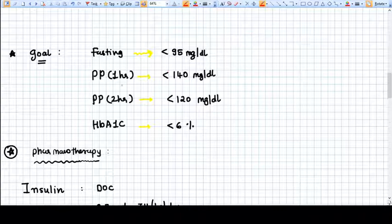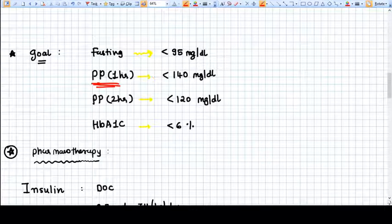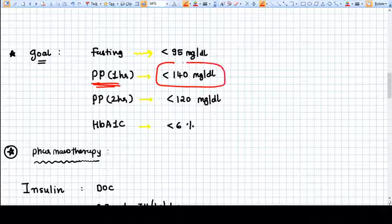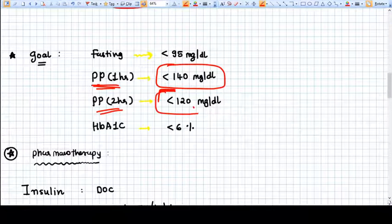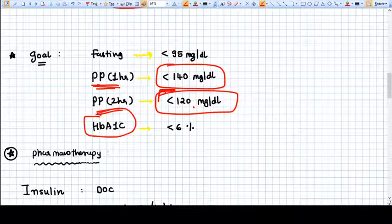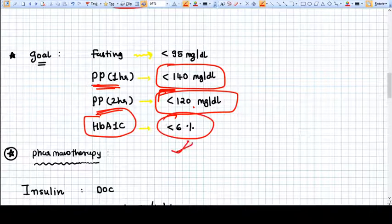What are our goals for glucose levels? Fasting should be less than 95 mg/dL. Post-prandial one hour, either after dinner or lunch, should be less than 140 mg/dL. After two hours, it should be less than 120 mg/dL, and the HbA1c level should be less than 6%.